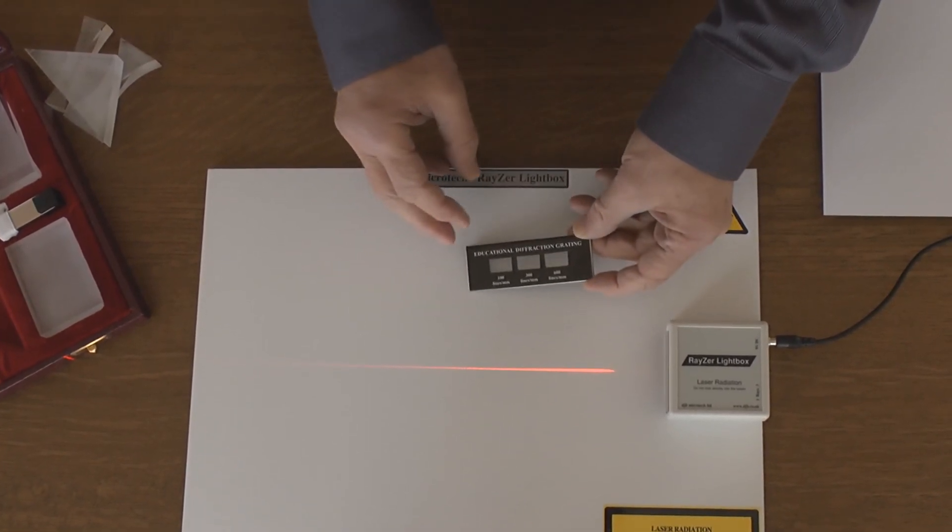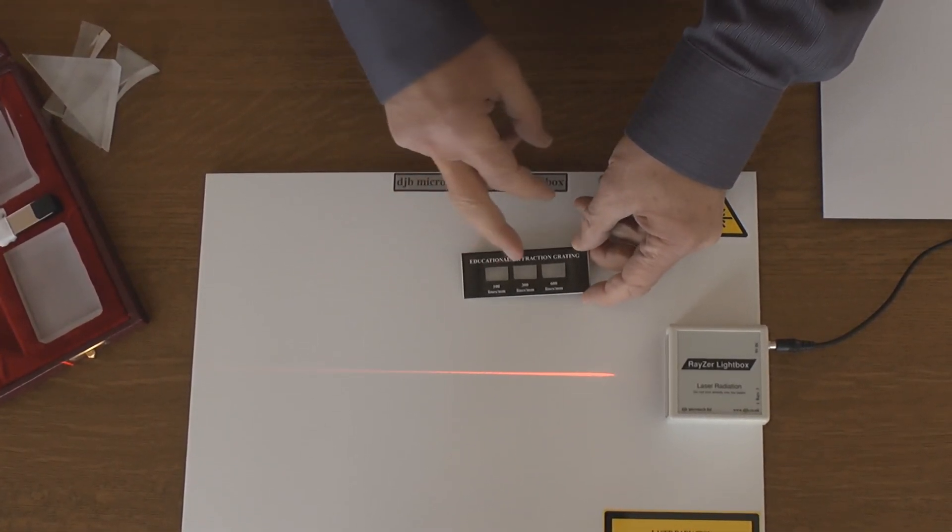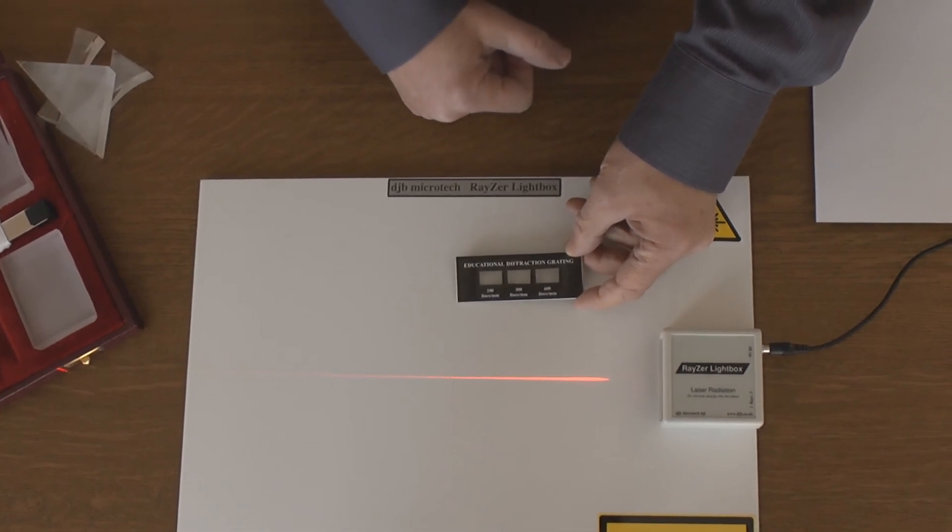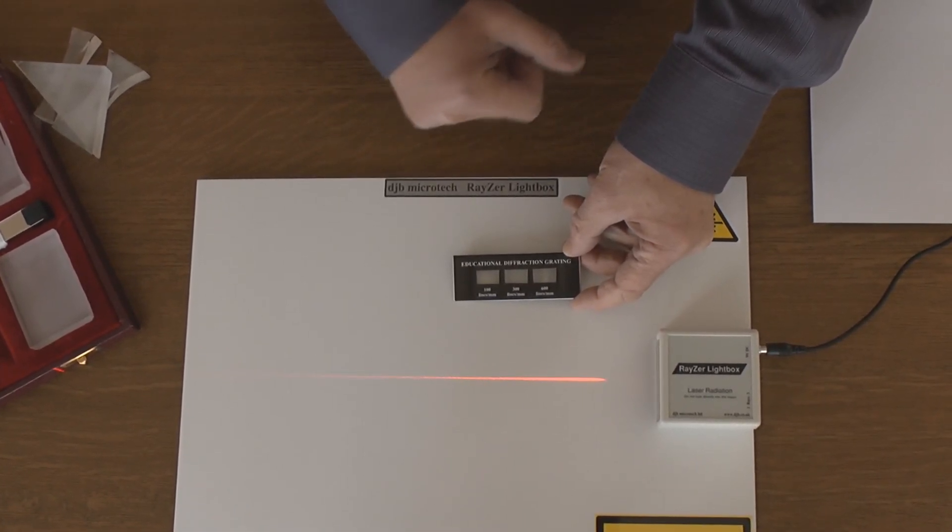The slide here has 100, 300, and 600 lines per millimeter for the diffraction grating.